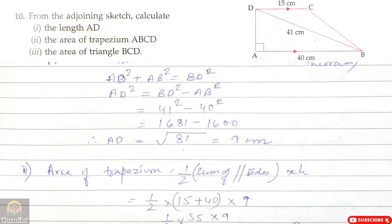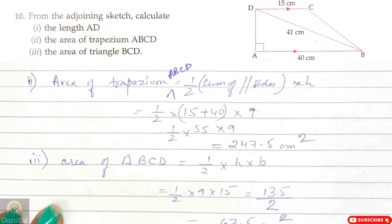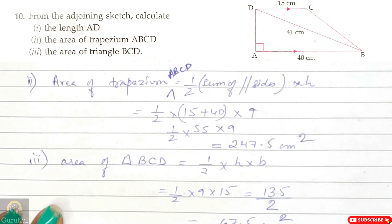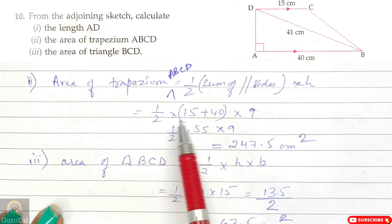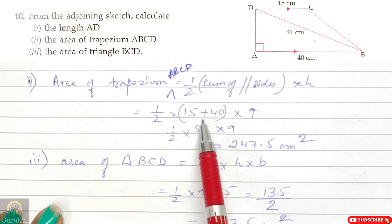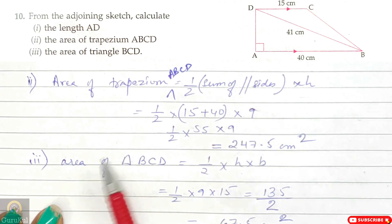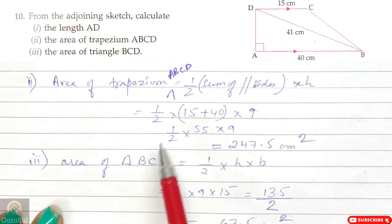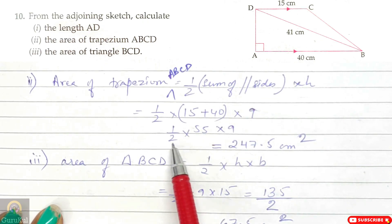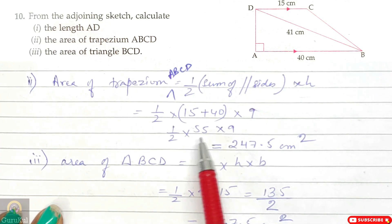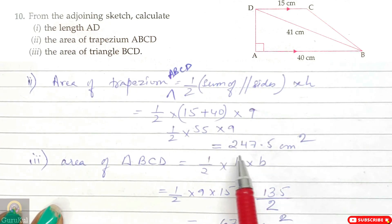Part 1 solved: AD = 9 cm. Second part: Area of trapezium ABCD = half into sum of its parallel sides into height = half into (15 + 40) into 9. After calculation: half into 55 into 9 = 247.5 cm square.